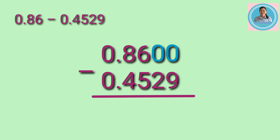Now the minuend and the subtrahend have equal decimal places, so we can subtract from right to left. Zero minus nine cannot be done, so we need to regroup. Since the next digit is also zero, we proceed to the digit six — six will become five, the zero in the thousandths place will become nine, and the zero in the ten-thousandths place becomes ten. So ten minus nine equals one.